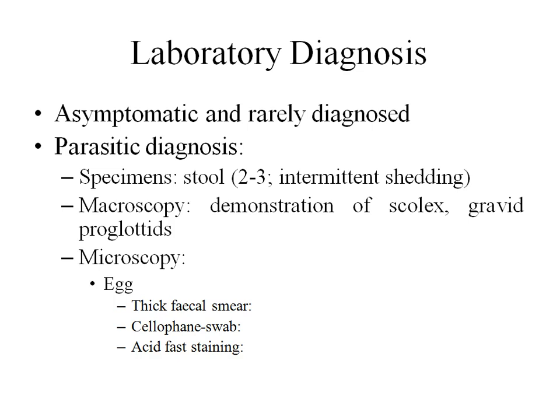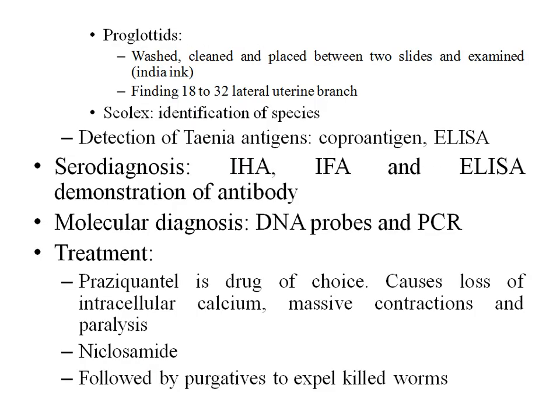Thick fecal smear is done to demonstrate eggs; anal swab technique can also be used. Acid-fast staining reveals the acid-fast nature of the parasite. Proglottids are washed, placed between two slides, and examined under a dissection microscope to identify the number of uterine branches and ovary lobes for species identification. Scolex examination allows definitive species identification. Detection of Taenia copro-antigens by ELISA can also be performed. Serodiagnosis using indirect hemagglutination, indirect fluorescent antibody test, or ELISA can detect antibodies. Molecular diagnosis by DNA probes and PCR is available.